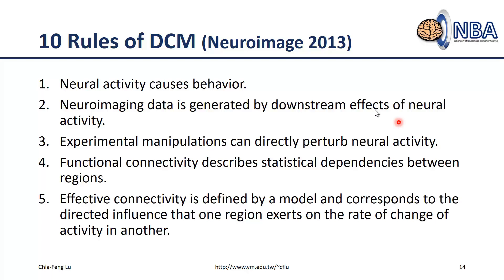A paper published in NeuroImage in 2013 summarized the general idea of DCM into 10 rules using plain language without heavy mathematics. Rule 1: neural activity causes behavior — changes in neural activity should respond to test stimuli or changes in subject behavior. Rule 2: neural imaging data (BOLD fMRI) is generated by downstream effects of neural activity, specifically the hemodynamic response — we measure the downstream vascular response, not direct neural activity.